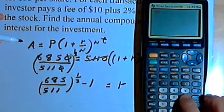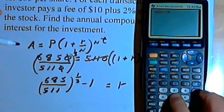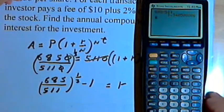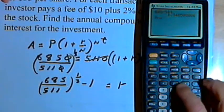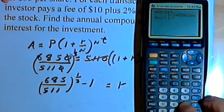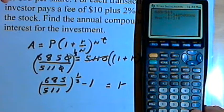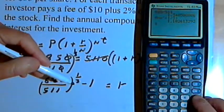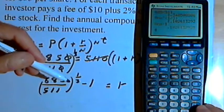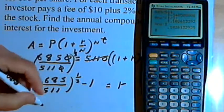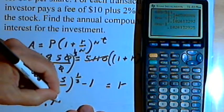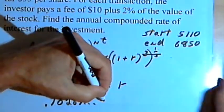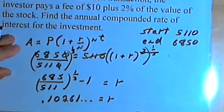So I want 685 divided by 511. I'll take the answer and raise it to the one-third power, 1 divided by 3. And then I just want to take that next answer and subtract a 1 from it. And what I end up with is 0.10261, and that's what r equals.